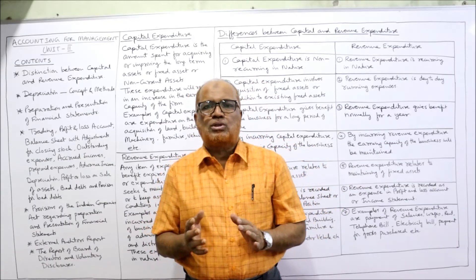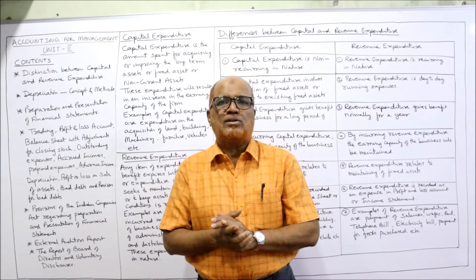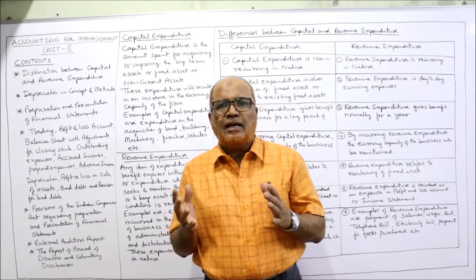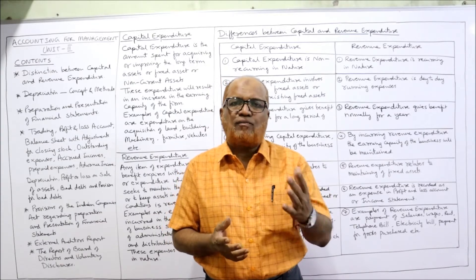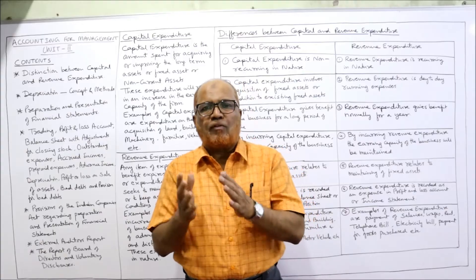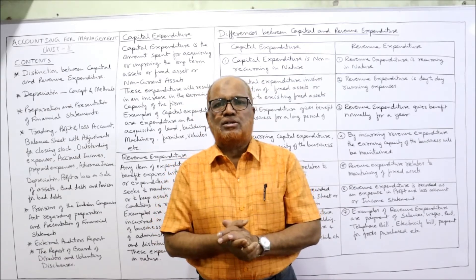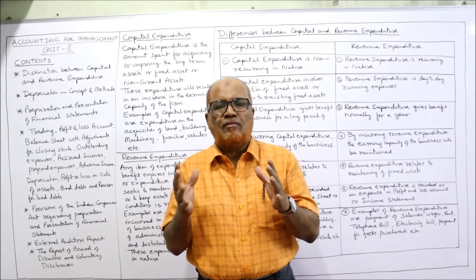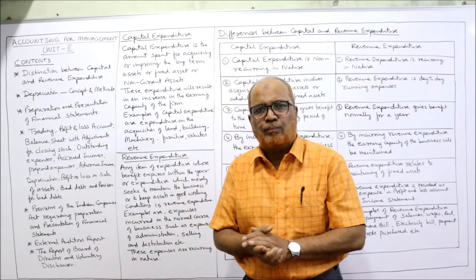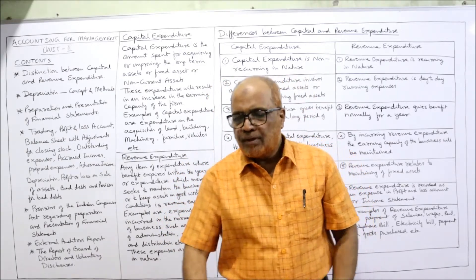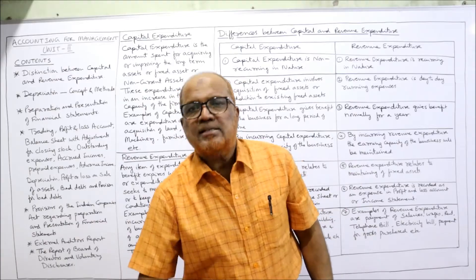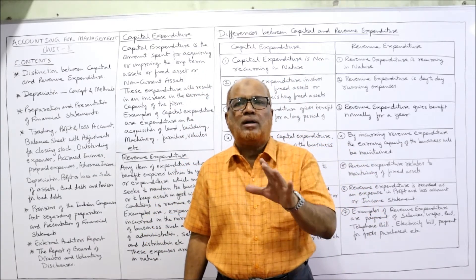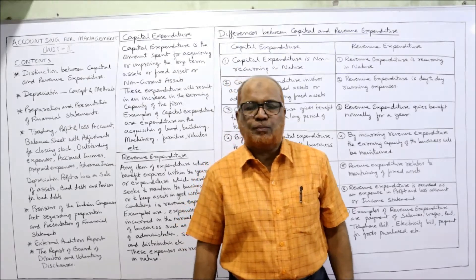In Unit 2, I am going to explain how to make the income statement and statement of financial position — that is, the profit and loss statement and balance sheet — along with all the rules. Before starting, take a screenshot of the points I have written, and then I'll explain the detailed contents of Unit 2.